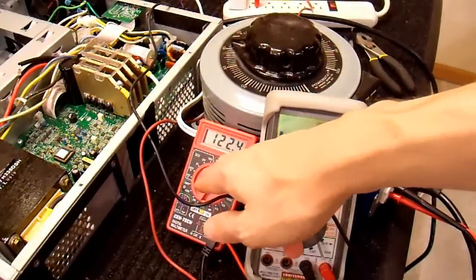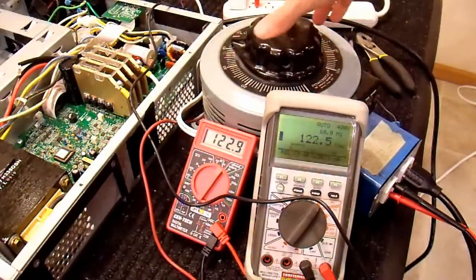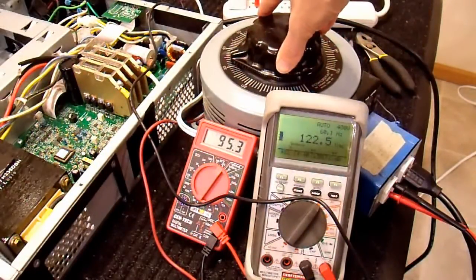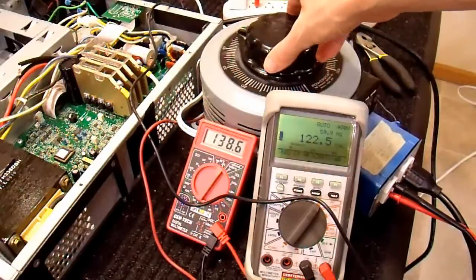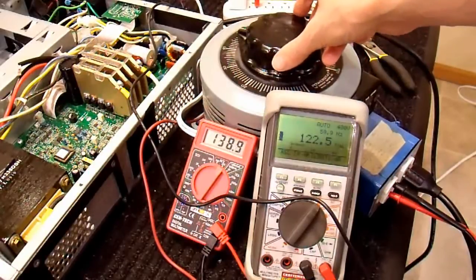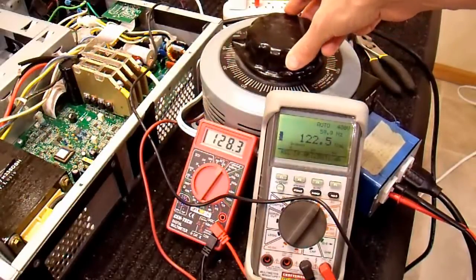This multimeter over here is just reading the output voltage of my transformer. So if I crank the voltage down, it goes down. If I crank it up, it goes up. So that's just the voltage that the UPS is getting into it.